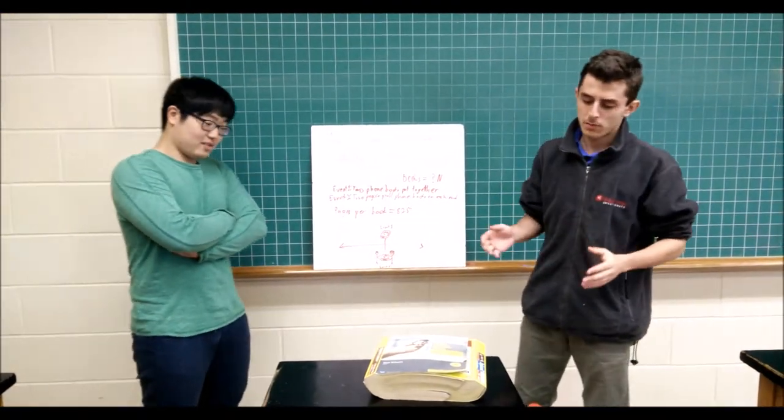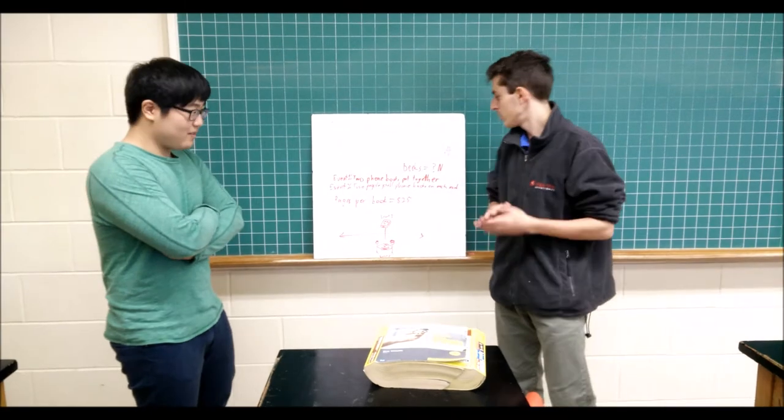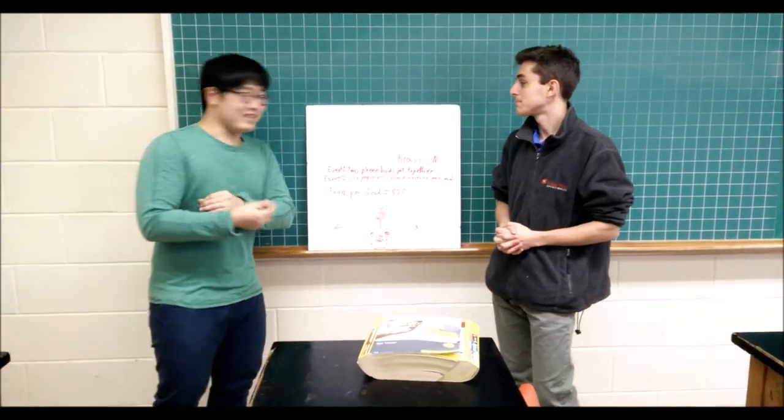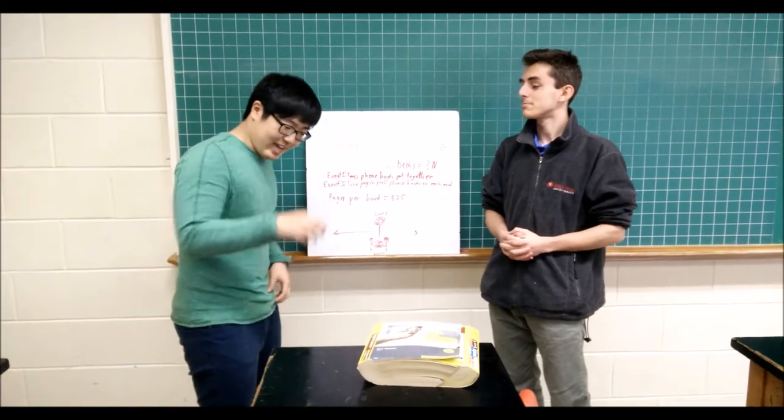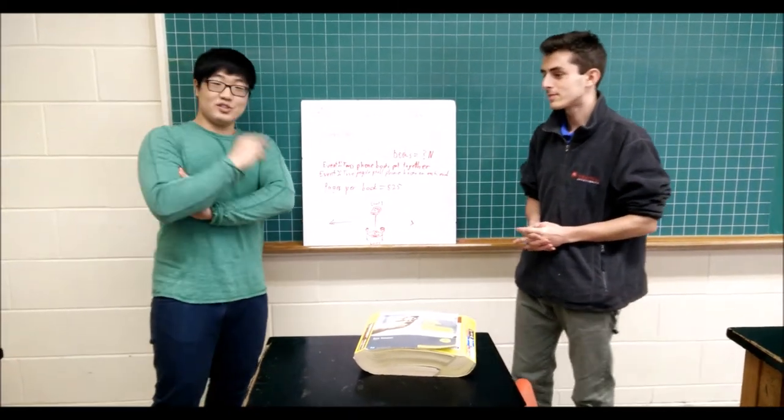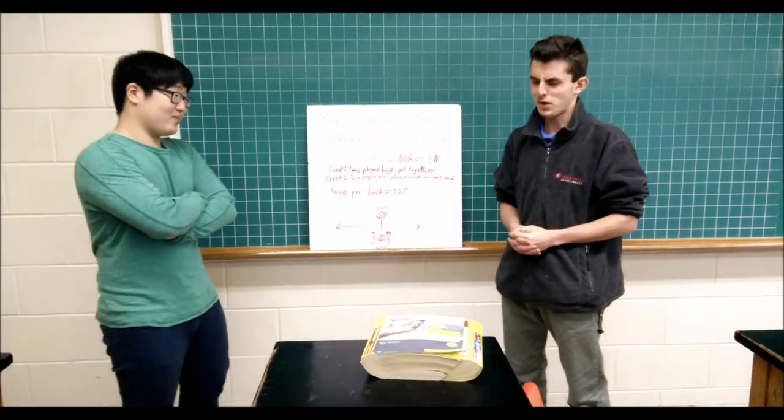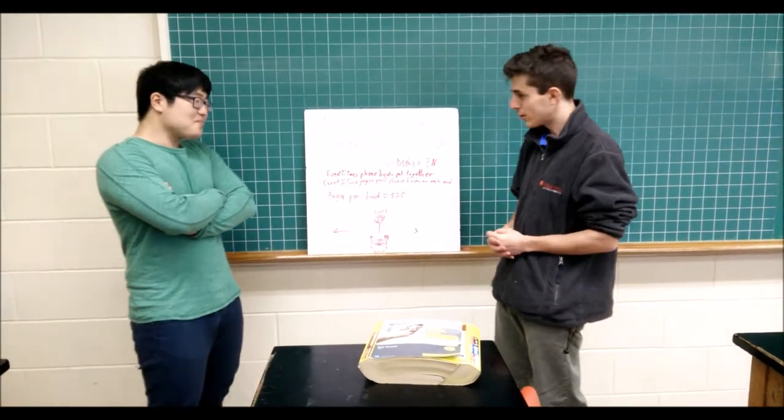So I see you and Monat are having problems pulling these phone books apart, so can you tell us the events required? I'm glad you asked, Roland. For event one, the two phone books are put together and just laying there. For event two, the two forces are applied to try and pull apart the two phone books. Wow, sounds very specific. Now can you tell us the variables?